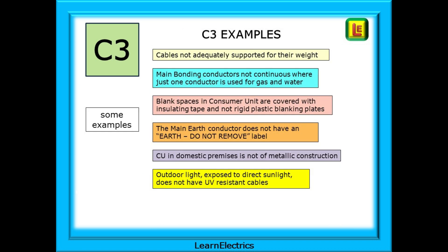Here are a few more C3 examples. You will come across installs where the main bonding conductors are not continuous — where the pipes are next to each other and just one earthing conductor is used for the gas and water, terminating at the gas pipe with a second conductor linking to the water pipe. The problem is that the gas bonding could be removed, leaving the water pipe without any main bonding. Another common one: outdoor lights connected with basic twin and earth cable with no UV stabilisation — after a few hot summers the outer sheathing will start to go hard and may crack or split. Think of C3s as being like advisories on an MOT for a car.